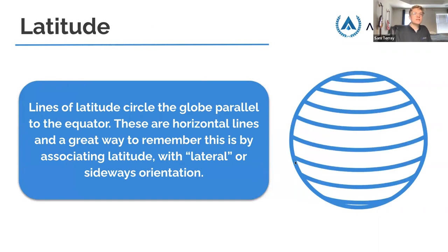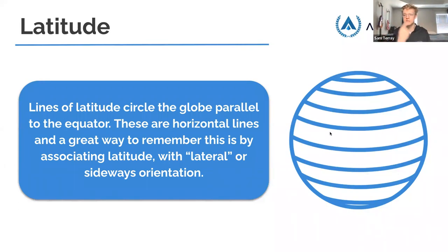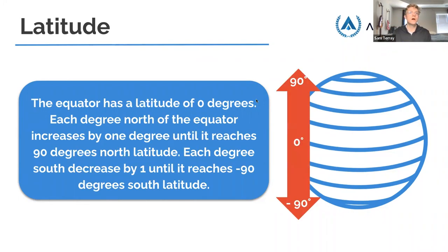What is a line of latitude? Latitude circles the globe parallel to the equator. These horizontal lines are a great way to remember that latitude is a lateral or sideways orientation. The way I think about it: latitude sounds like 'ladder.' So if you look at a globe, the lines look like the rungs of a ladder — you could sit there and climb the globe. Latitude, ladder — that's how I think about it.